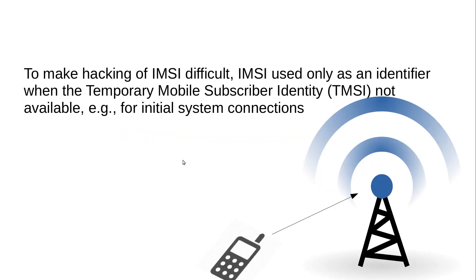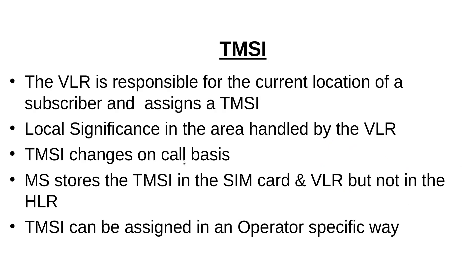As IMSI is the identity of a subscriber, it rarely leaves the mobile station, or it is rarely sent over the air interface. It is only used on the wireless channel between the mobile station and the base station when, for example, a mobile is powered up. When it is switched on, it will register itself with the network, and to identify itself the mobile station will use the IMSI. But after that, a TMSI — Temporary Mobile Subscriber Identity — is assigned so that IMSI is no more sent over the air interface, and its possibility of being hacked is small.